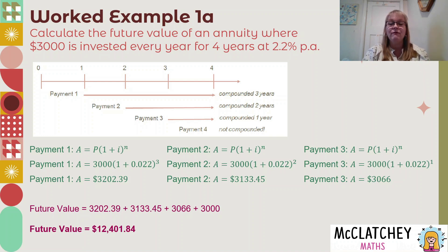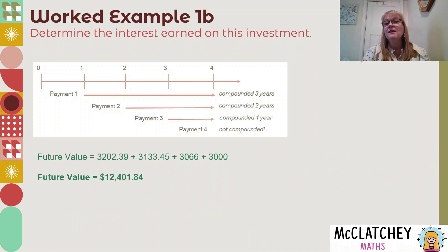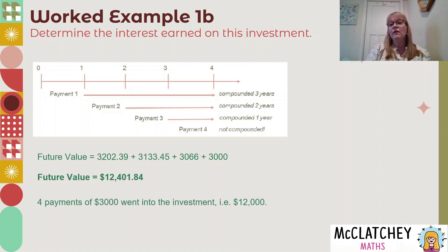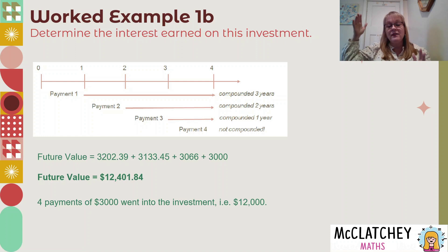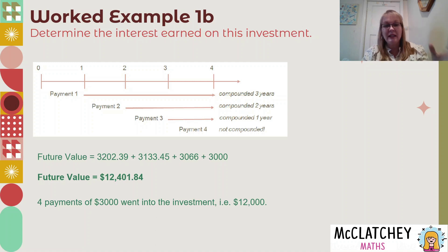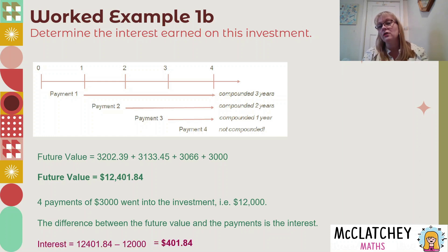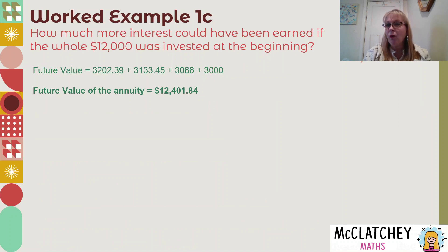So we found the future value: $12,401.84. The next part of the question is to determine the interest earned. After four years we have $12,401.84, but we need to think logically about how much we put in. We made four payments of $3,000, so we put in $12,000 altogether. The difference between what we put in and what we have at the end is the interest earned: $12,401.84 minus $12,000 equals $401.84 interest over the four years.